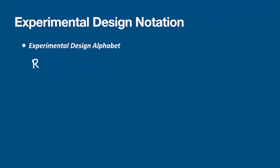Those letters are R, O, T, and C. Hopefully that's easy to remember, especially if you were ever in an ROTC program. Now for research purposes, the R, O, T, and C stand for something in particular.